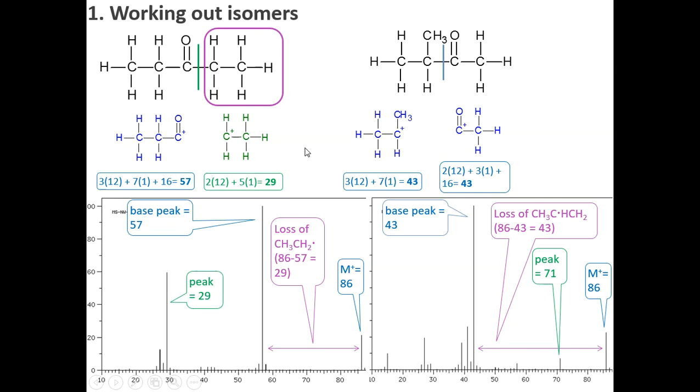And here we have a peak at 71 rather than 29, and that's because we've lost a methyl and that has been stabilized by the carbonyl acylium ion. So we do get a peak there. Notice we don't have a peak over here because if we lost a methyl, we only have a primary carbocation. So it doesn't, there's a very tiny peak there.